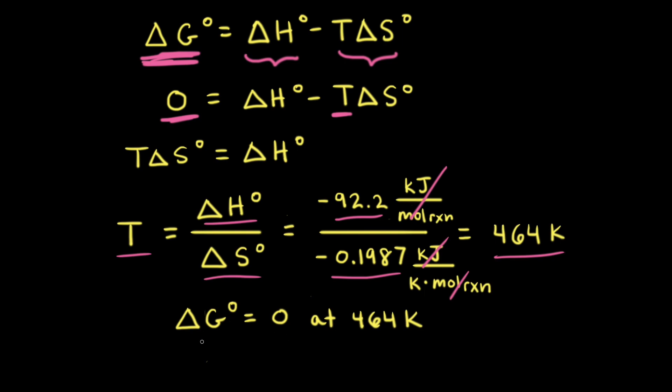For this particular reaction, ΔG⁰ equals zero at 464 Kelvin. At temperatures less than 464 Kelvin, the forward reaction is thermodynamically favorable. However, at temperatures higher than 464 Kelvin, the forward reaction is thermodynamically unfavorable.